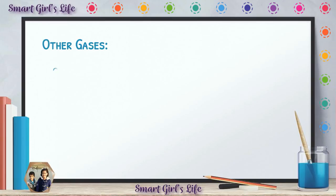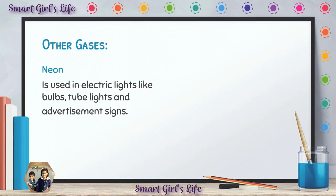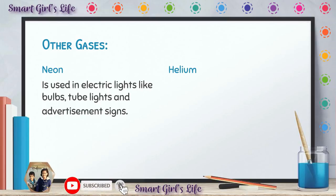Now we are going to read about the other gases. What are the other gases? First of all, we have neon gas. It is used in electric lights, tube lights, and advertisement signs. It is used in all of these things and many more.